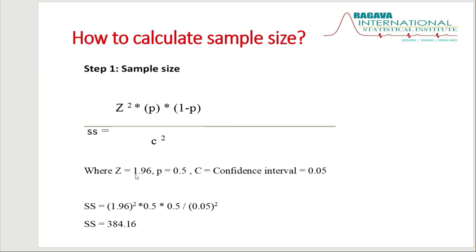What is Z? Z is 1.96, the statistical table value. What is P? P is the proportion of success, which is 0.5 — a hypothetical value. And 1 minus P is simply 1 − 0.5 = 0.5. What is C? C is the confidence interval, equal to 0.05. These values are all constants — they do not vary from problem to problem.